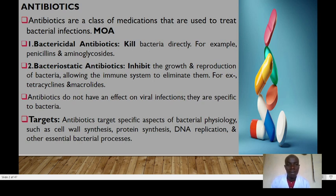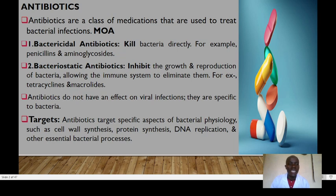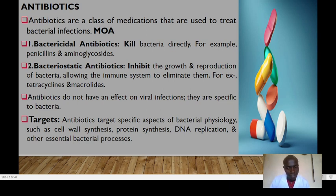Antibiotics have two major modes of action: they can either be bactericidal or bacteriostatic. Bactericidal antibiotics kill bacteria directly — good examples include penicillins and aminoglycosides. Bacteriostatic antibiotics work by inhibiting the growth and reproduction of bacteria, allowing the immune system to eliminate the microbes. Good examples include tetracyclines and macrolides. Antibiotics do not have an effect on viral infections — they are specific to bacteria.